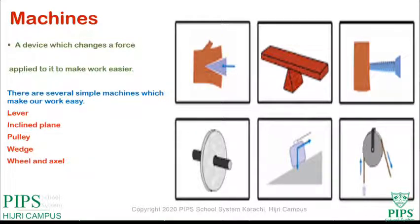For example, when we use an old spoon to pry the lid off a tin of paint, we are using a simple machine — just like a screwdriver. These are simple machines which enable us to do work more easily.